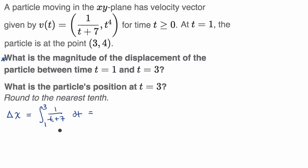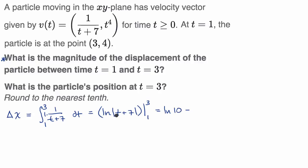To evaluate the integral of 1/(t + 7), note that the derivative of (t + 7) is just 1, so we can take the antiderivative with respect to (t + 7), giving the natural log of |t + 7|. Evaluating from 1 to 3: ln|10| − ln|8| = ln(10/8) = ln(1.25).